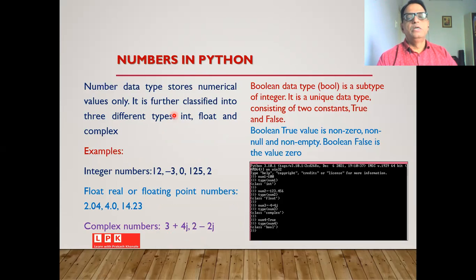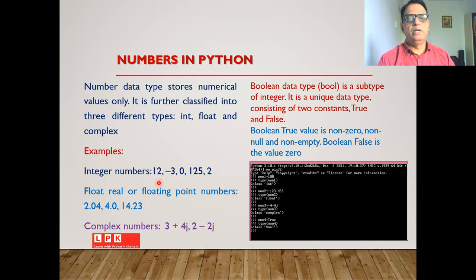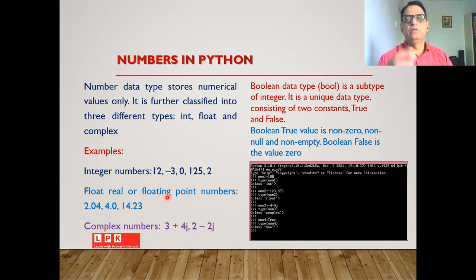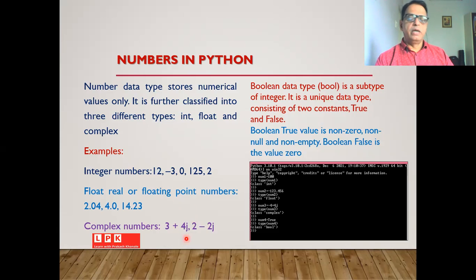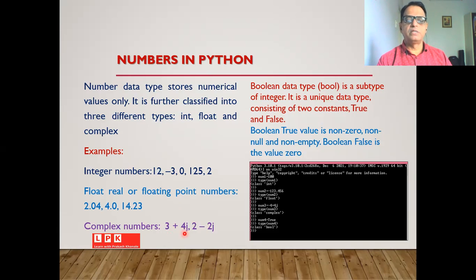The number or numeric data type is used to store only numbers, and we have three types: integer, float, and complex. An integer can be a positive or negative whole number. A float is a fractional number with an integer part and a fractional part. A complex number has two parts — the real part and the imaginary part with variable j, so a number such as 3+4j becomes a complex number.